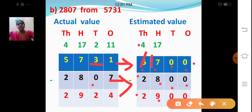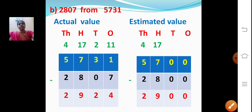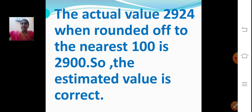Let us check whether the answer is correct. Round off 2924 to the nearest hundred. We have 2 in the tens place, less than 4. Place 0 in ones and tens, hundreds remains the same. The answer is 2900. The actual value 2924, when rounded off to the nearest hundred, is 2900. So the estimated value is correct.